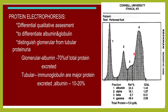Next is protein electrophoresis, which shows albumin and the globulins — alpha, beta, and gamma globulins. It helps in the differential qualitative assessment of proteins, allowing differentiation between albumin and globulin. When albumin is predominantly excreted, it is mainly due to glomerular proteinuria, as 70% of cases excrete albumin when glomeruli are involved. When globulins are elevated, it indicates tubular proteinuria, since the majority of low molecular weight proteins are excreted in tubular proteinuria. So protein electrophoresis can distinguish between glomerular and tubular proteinuria.